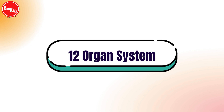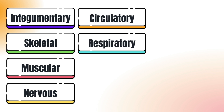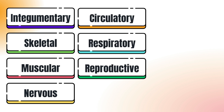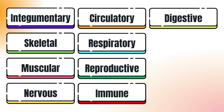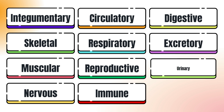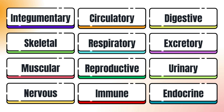There are 12 organ systems: the integumentary system, skeletal system, muscular system, nervous system, circulatory system, respiratory system, reproductive system, immune system, digestive system, excretory system, urinary system, and endocrine system.